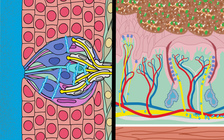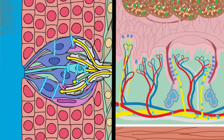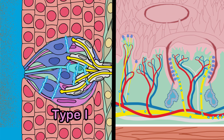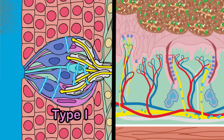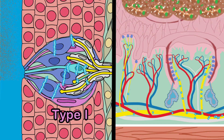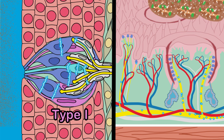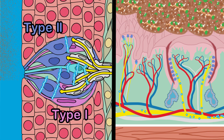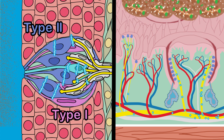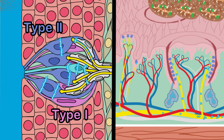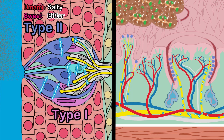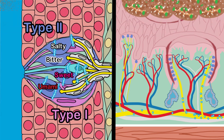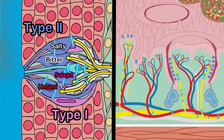Taste buds are classified into three different types. About half of the total cells in a taste bud are type 1 cells, which have glial-like functions, expressing enzymes and transporters that eliminate extracellular neurotransmitters. Approximately one-third of the cells are type 2 cells, which are larger in diameter and function as chemosensory receptors for sugars, amino acids, ions, and bitter stimuli. Type 2 cells respond to one taste quality, such as sweet or bitter, but not both.